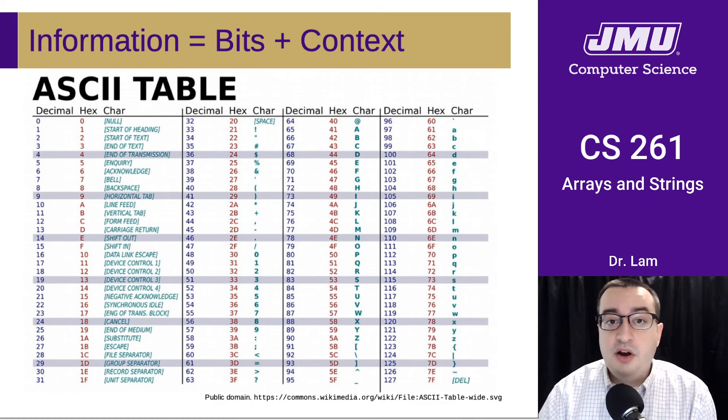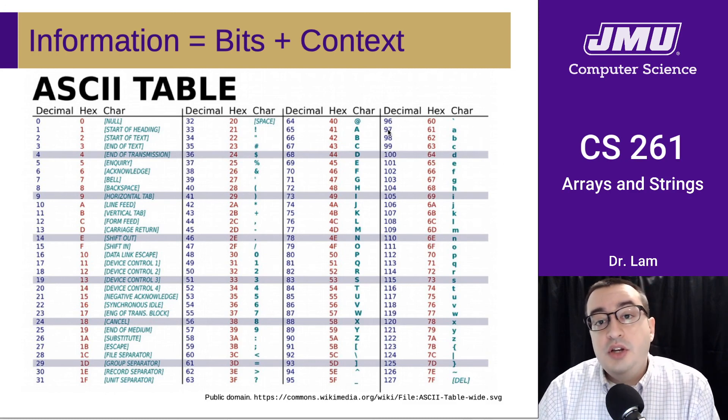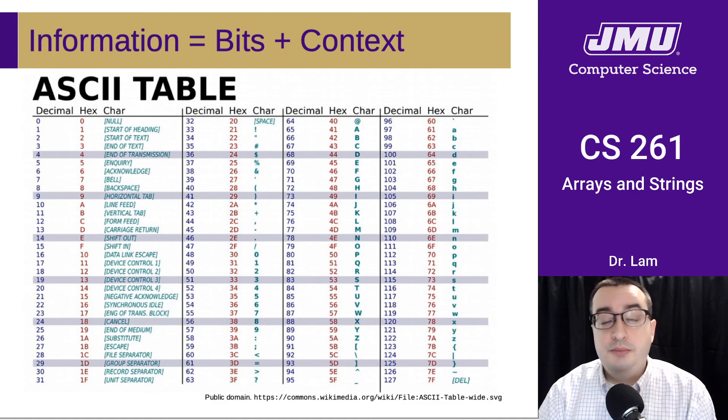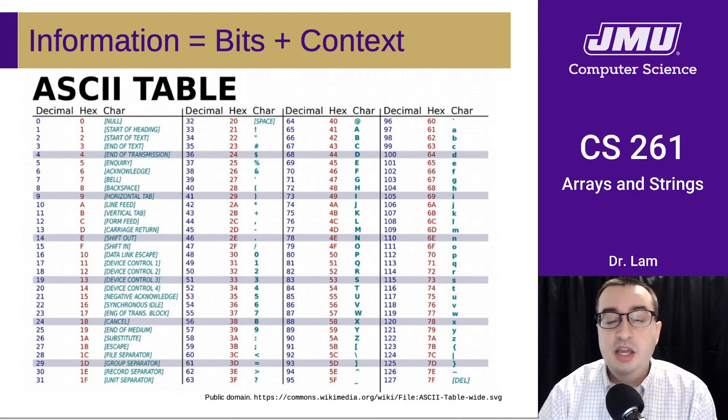These are the values that are stored under the hood. If you didn't know that you were looking at a string, it would just look like an array of numbers. That's why it's really important to consider the types, because the types give you context. If you don't know you're looking at a string, it's just going to look like a bunch of numbers.